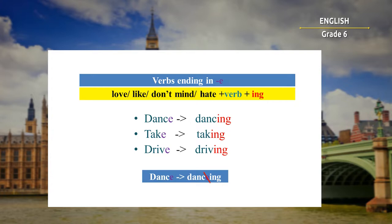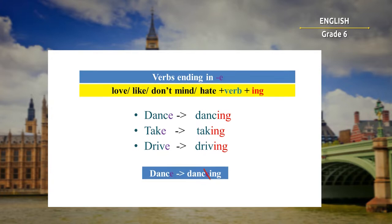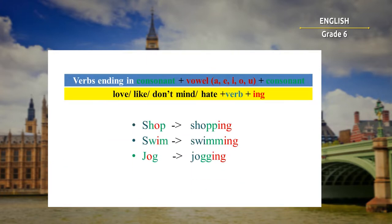'Take' becomes 'taking,' and 'drive' becomes 'driving.' Pay attention here: if the verb has one syllable and ends in consonant-vowel-consonant, the last letter doubles. For example, 'shop' becomes 'shopping' — we double the last letter 'p' and add -ing. 'Swim' becomes 'swimming,' and 'jog' becomes 'jogging.'